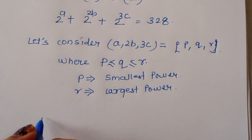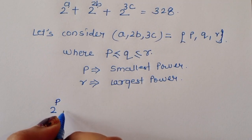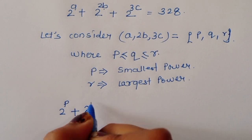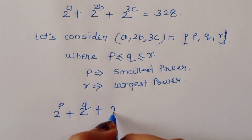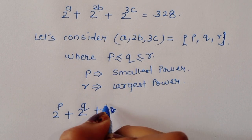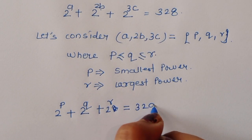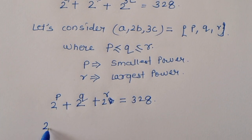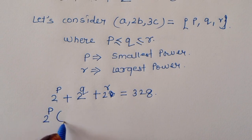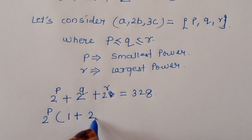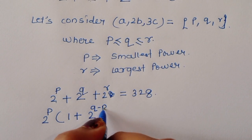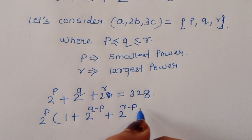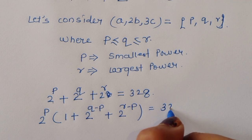So we can write 2^P + 2^Q + 2^R = 328. Taking 2^P as common, we get 2^P times (1 + 2^(Q−P) + 2^(R−P)) = 328.